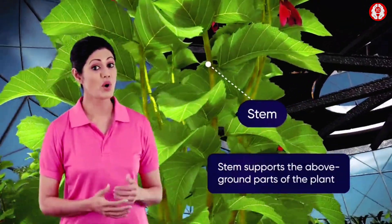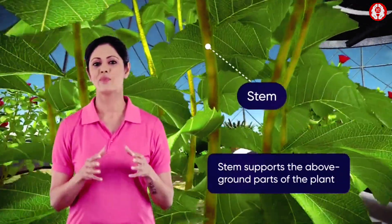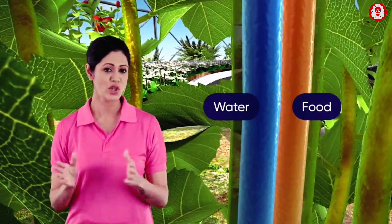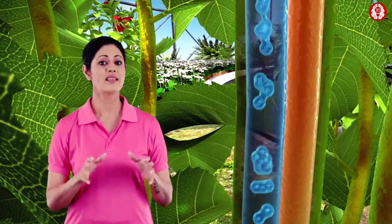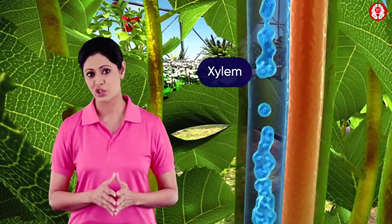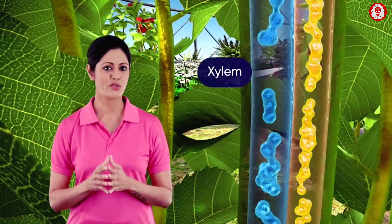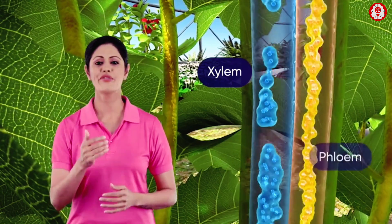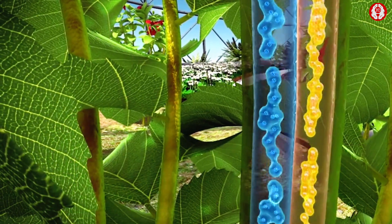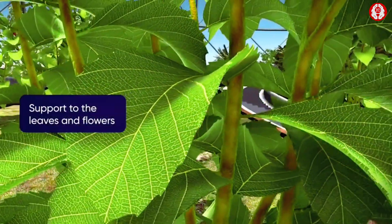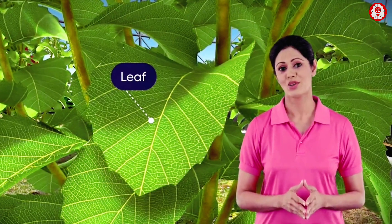The stem is another important part of the plant and possesses two tubes which carry water and food respectively. The tube which carries water to the leaves is called the xylem, and the tube that carries the prepared food to various parts of the plant is called the phloem. The stem also provides support to leaves and flowers.